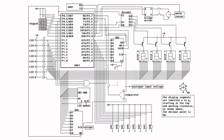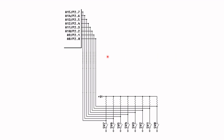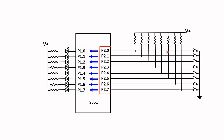Here we are again with the logic diagram of the EdSim51, but this time I want to focus on Port 2. Let me extract this part of the circuit. I've removed the rest of the logic diagram, and I'd like to redraw this part. I've also included Port 1 with the LED interface.